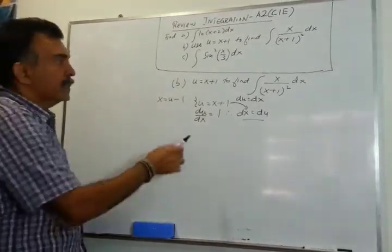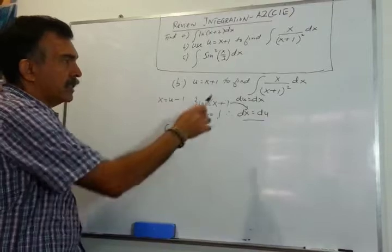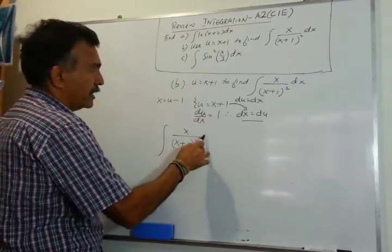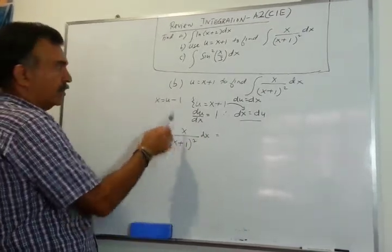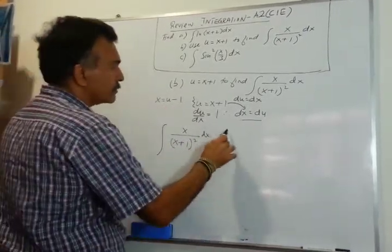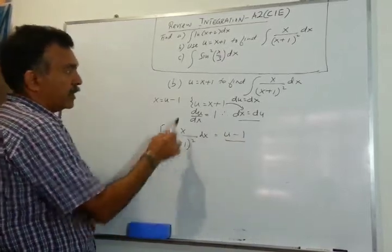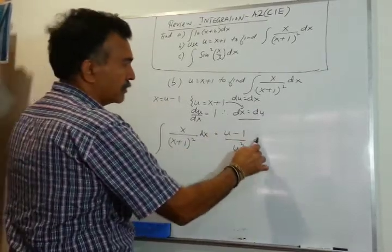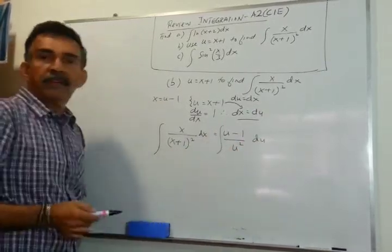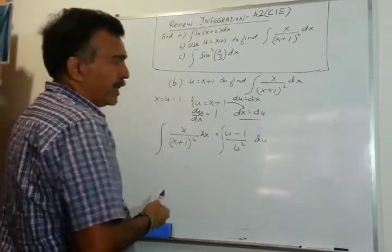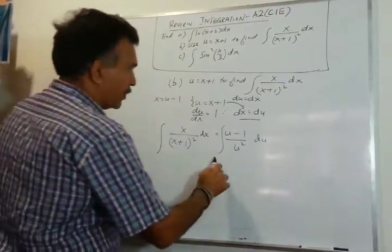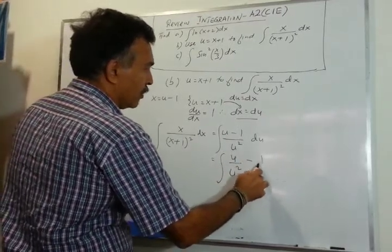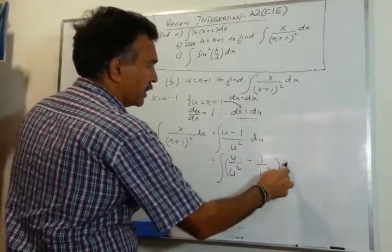Let's come back to our integral: x over (x+1)² dx. What is x? It's u minus 1. What is (x+1)? That's u, so we have u squared. And dx becomes du. So the integral becomes (u minus 1) over u² du.